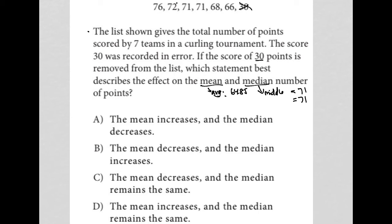Again I do the exact same thing but remove the 30. So I clear my calculator, go back and add up all these values: 76 plus 72 plus 71 plus 71 plus 71 plus 68 plus 66, and then divide by six. That average then goes up to 70.67.